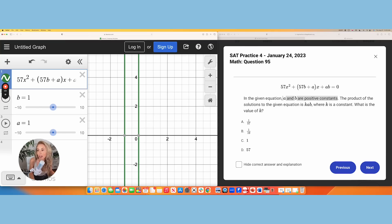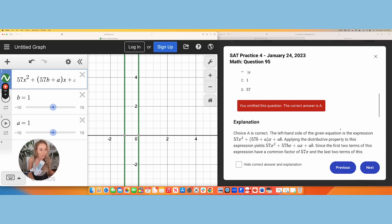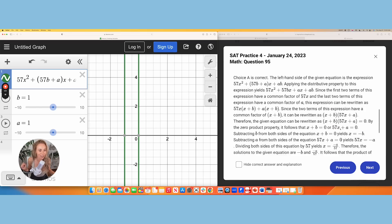And that rounds to 0.18. So it's going to be A. And as you can see, the answer is A. So go Desmos! So much easier than doing all of that.